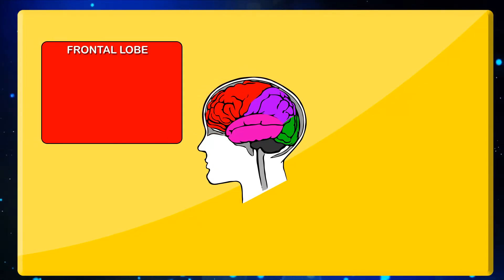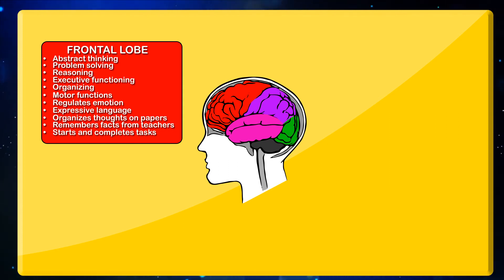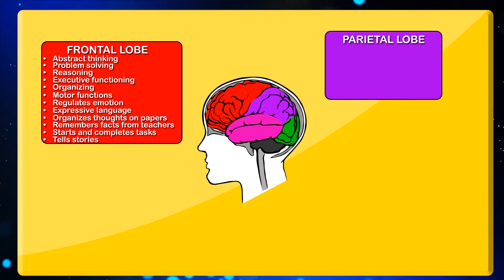Let us look into the functions of the various parts of the brain in detail. Different areas of the brain handle different functions. These areas get established for their core function at birth itself; however, higher brain functions become possible as and when the brain grows. The frontal lobe takes care of abstract thinking, problem solving, reasoning, executive functioning, organizing, motor functions, and regulating emotions, expressive language, organized writing, remembering facts, starting and completing tasks, and telling stories. The parietal lobe takes care of sensory information — taste, touch, smell, and temperature.